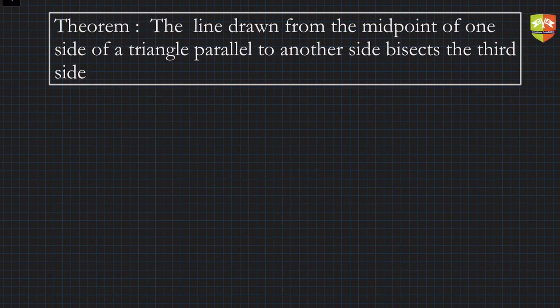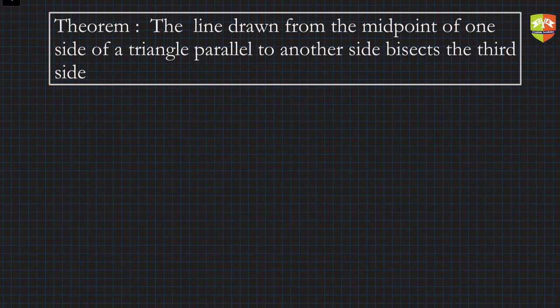Hello friends, welcome again to another session on triangles. We have another theorem here and we will try to prove it. The theorem says: the line drawn from the midpoint of one side of a triangle, parallel to another side, bisects the third side. This is the converse of the midpoint theorem which we studied in the previous grade.